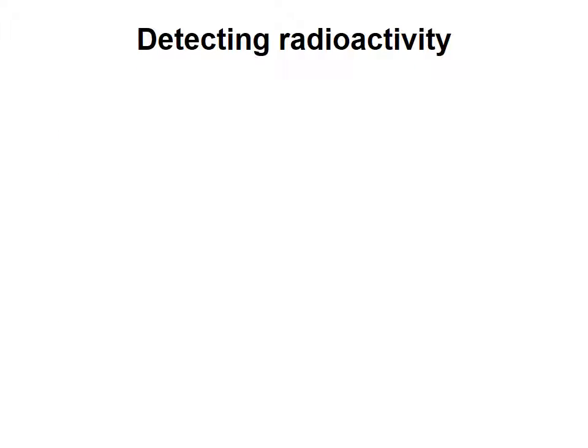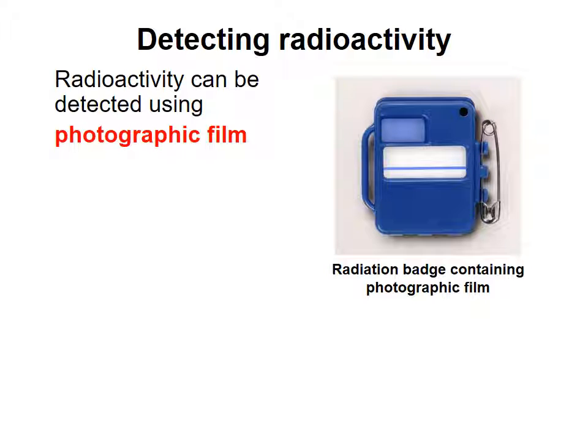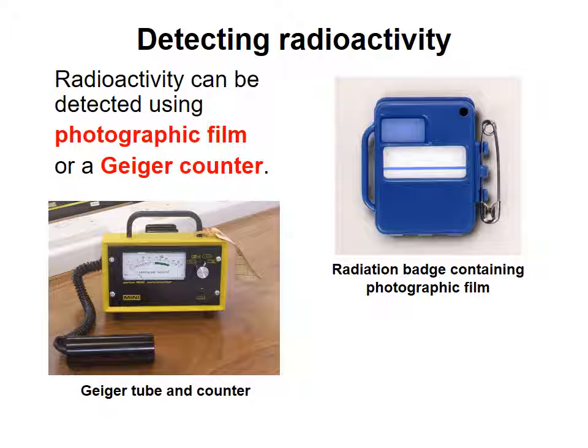So how do we actually detect radioactivity? In the previous unit, we looked at alpha, beta, gamma radiation. So how do we actually detect this form of radiation? Radioactivity can be detected using something called photographic film. If you're at a nuclear power plant, you might have some photographic film as a badge. If it decolorizes, it means there's been radiation.